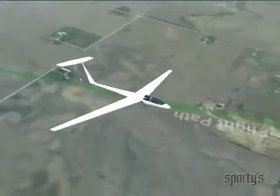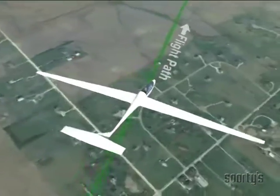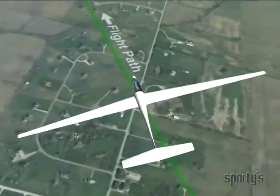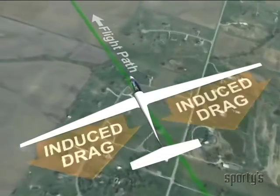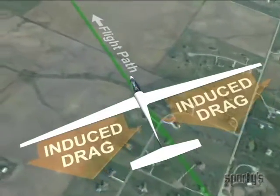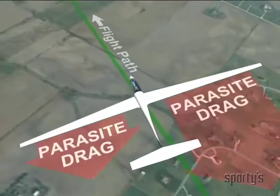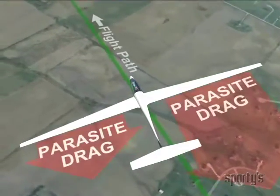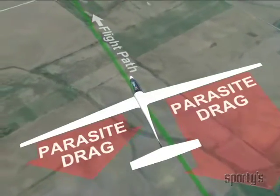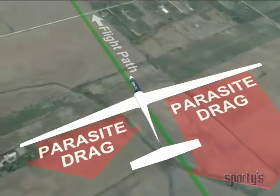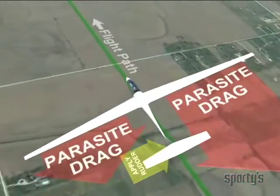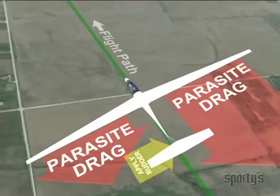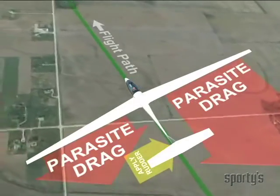Even with the lift on both wings approximately equal in the turn, the sailplane may still tend to yaw a bit to the outside of the turn. While the induced drag is about equal for both wings, the parasite drag has increased for the faster wing, creating a yawing moment toward the outside of the turn. This must be counteracted with a bit of rudder toward the inside of the turn.